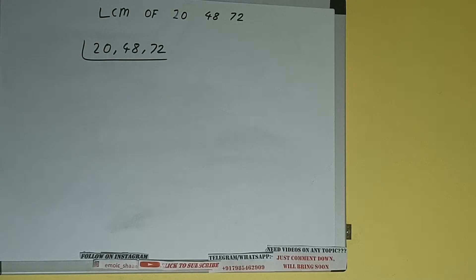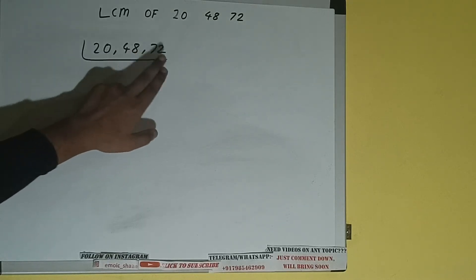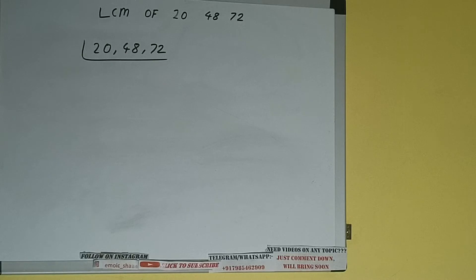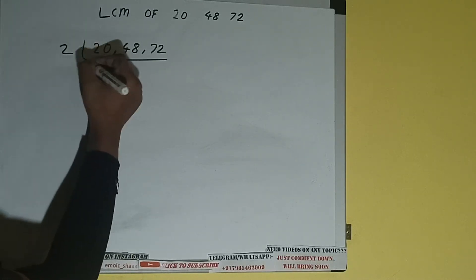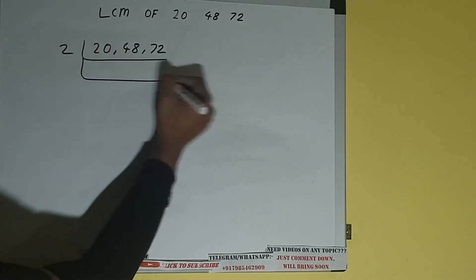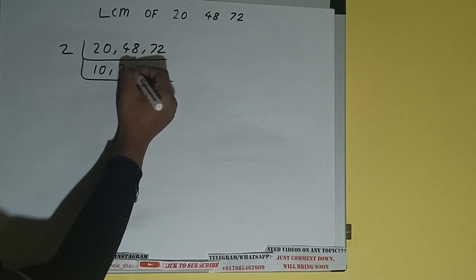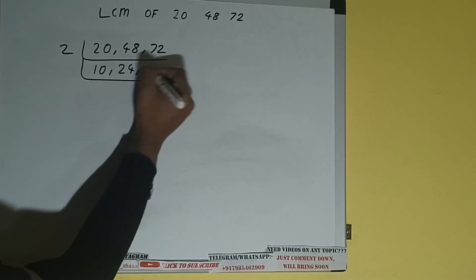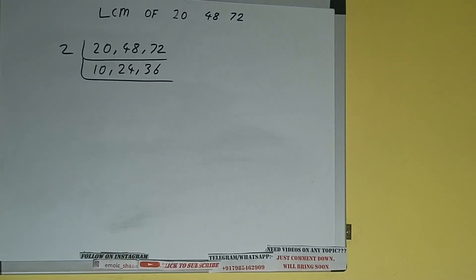We check if any of the numbers are divisible or not. All three numbers can be divided by 2, so we'll divide. On dividing, this will become 10, this will become 24, and this will become 36.